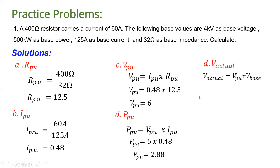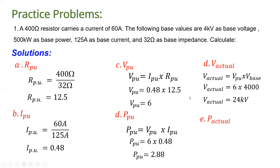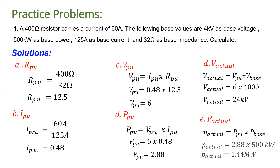For the actual voltage: actual voltage equals per unit voltage multiplied by the base voltage, so 6 multiplied by 4000 gives 24 kilovolts. For the actual power: actual power equals per unit power multiplied by the base power, giving 1.44 megawatts.